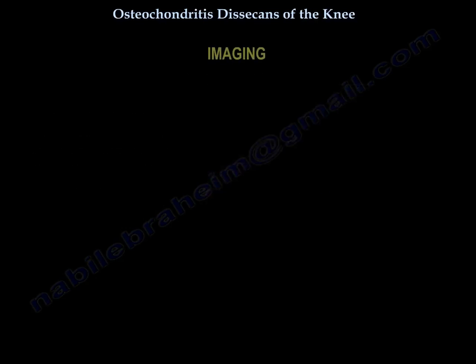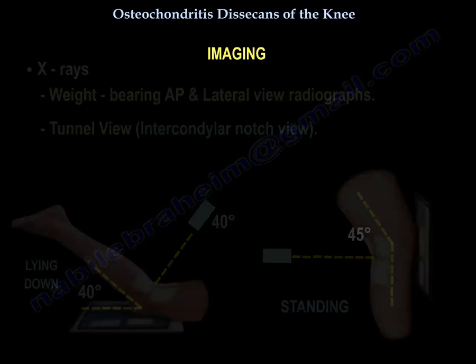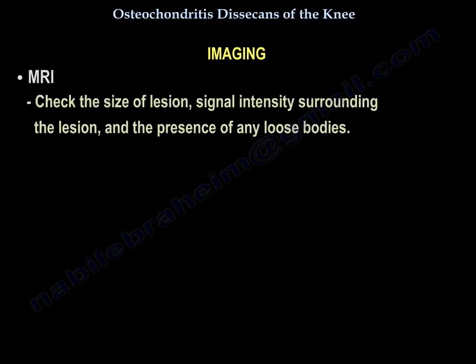Imaging includes weight-bearing AP and lateral view radiographs, tunnel view, and intercondylar notch view. MRI is used to check the size of the lesion, signal intensity surrounding the lesion, and the presence of any loose bodies.